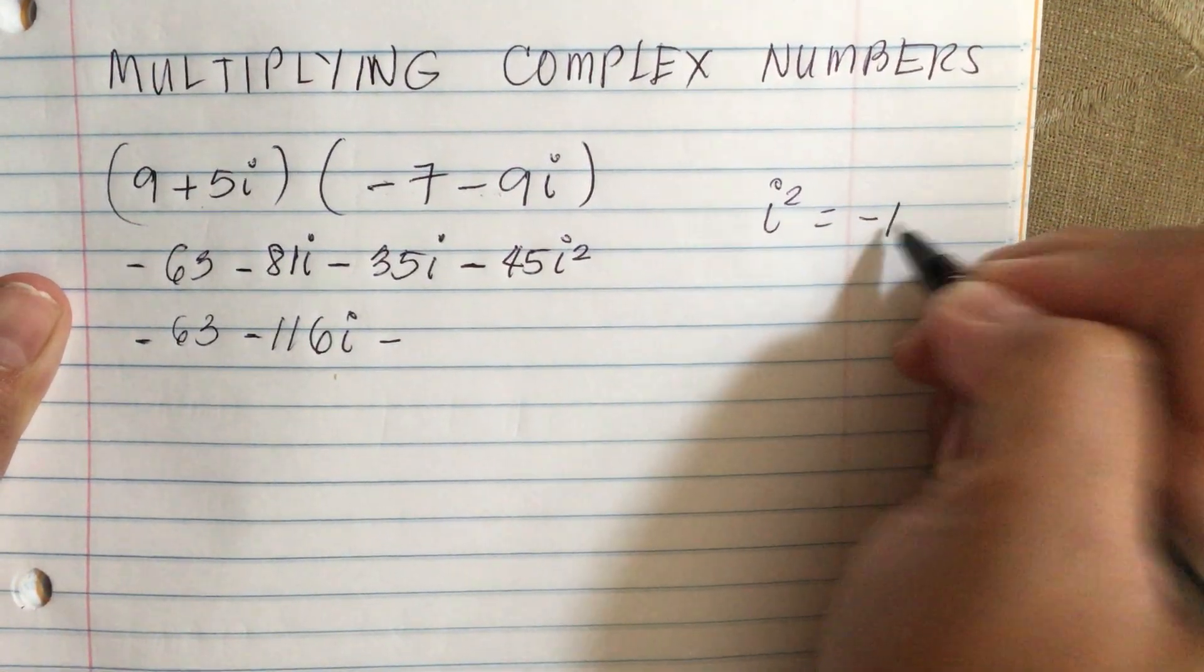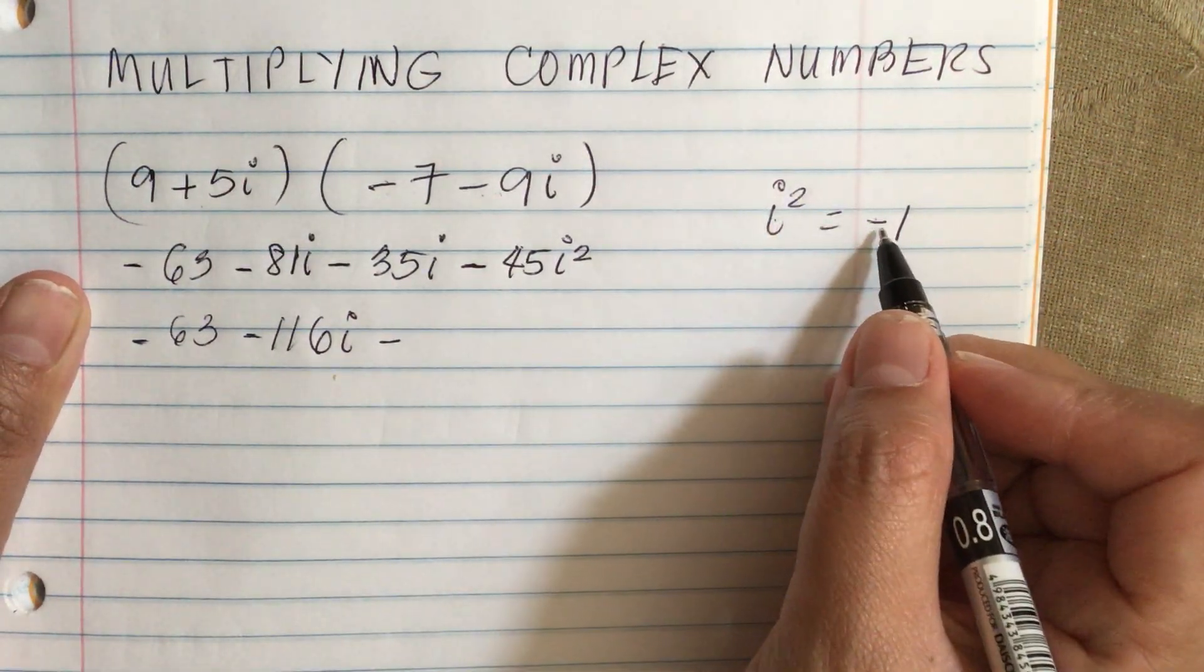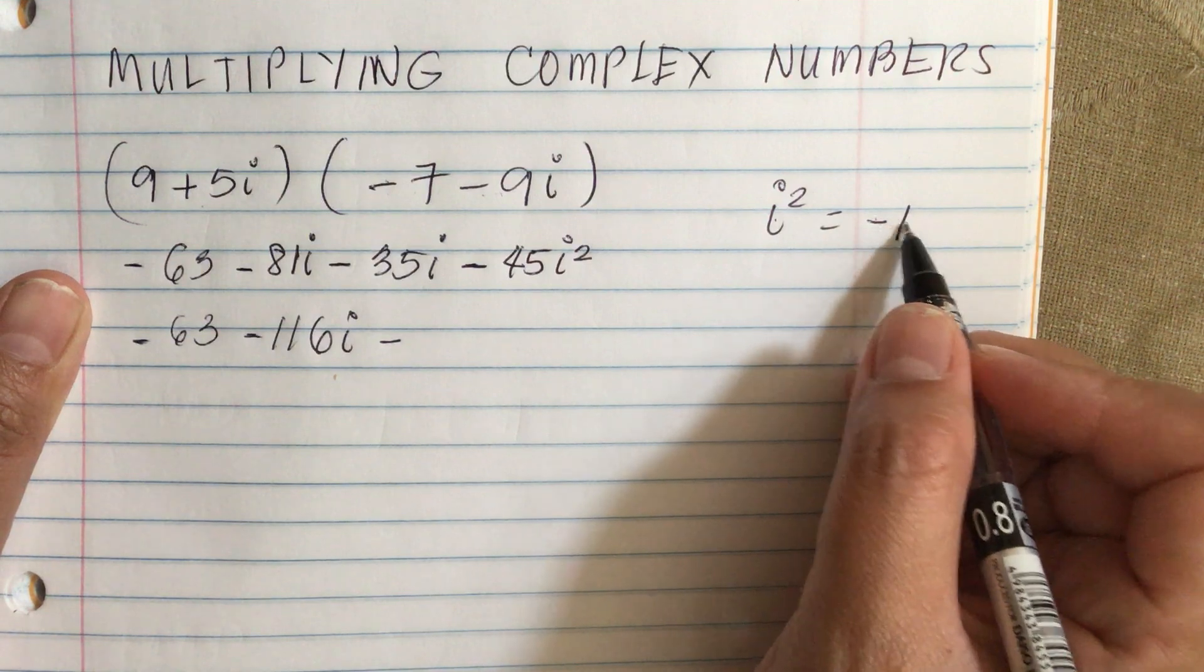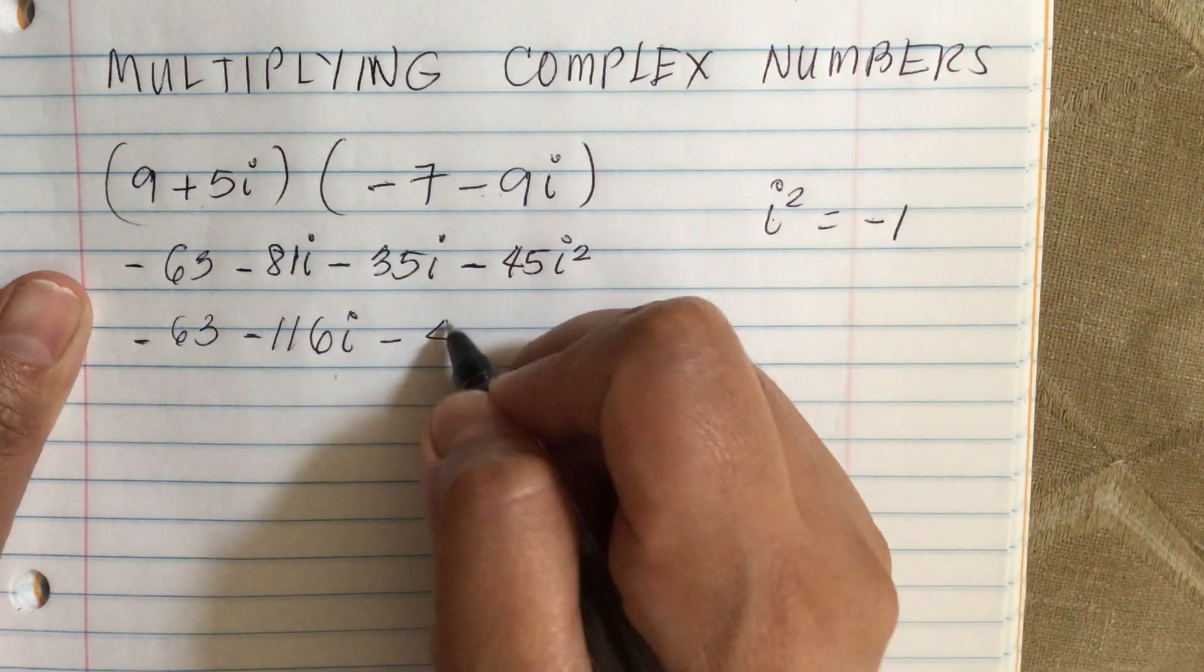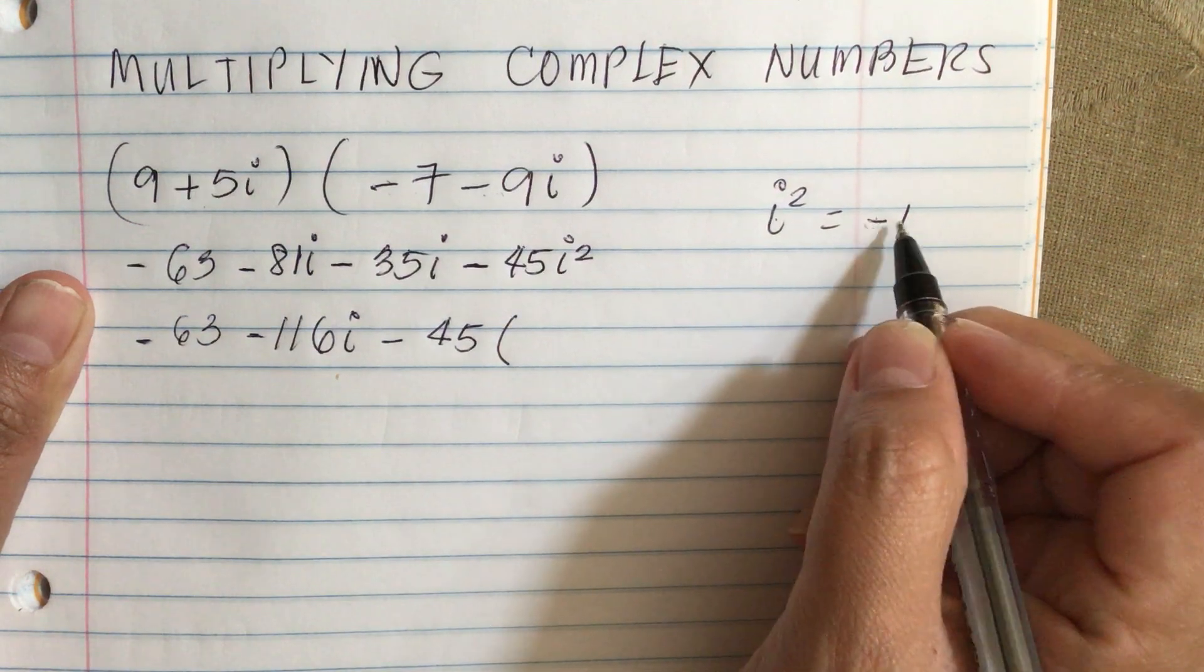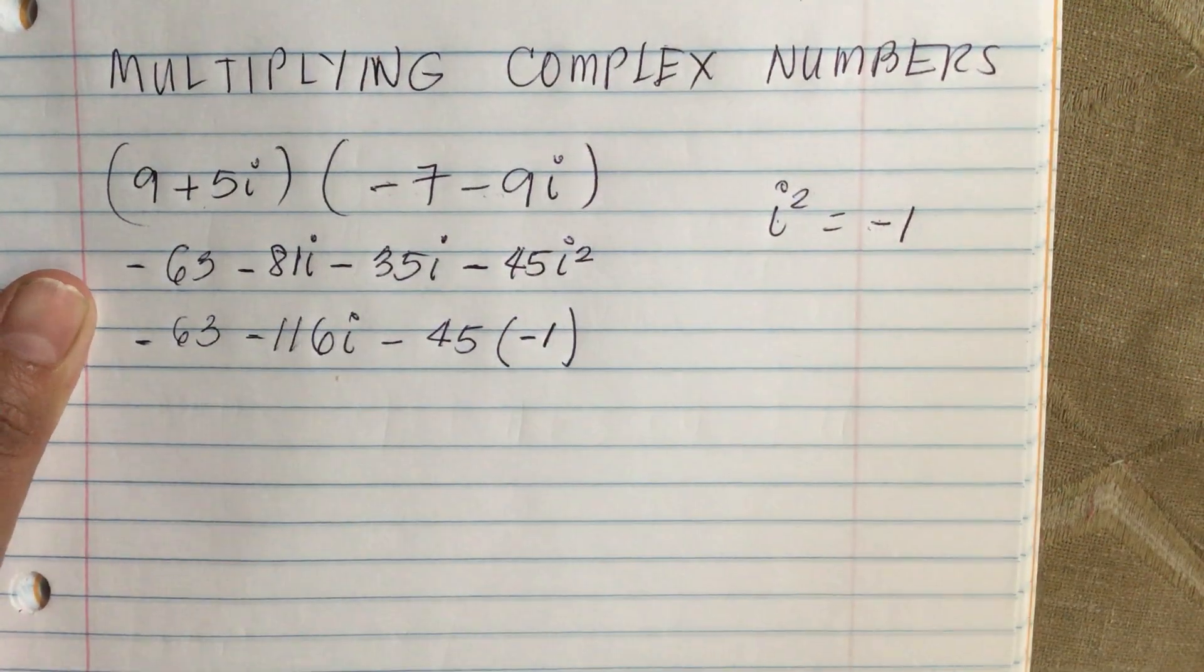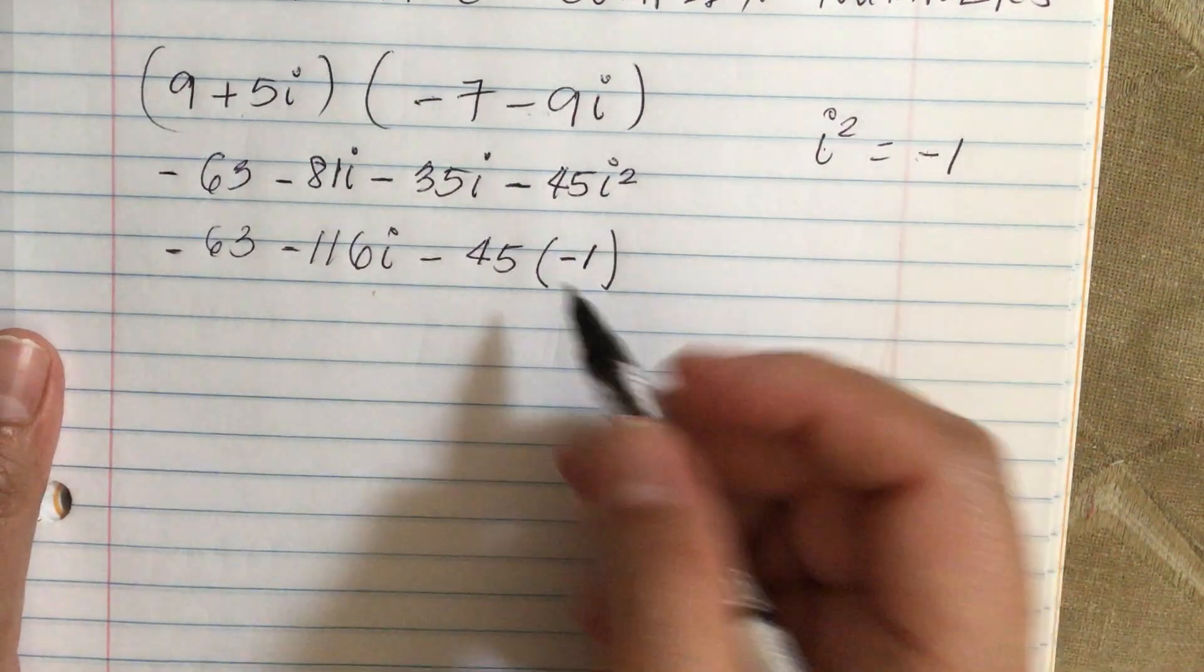So we replace i squared with minus 1, so minus 45 times minus 1. Now we simplify.